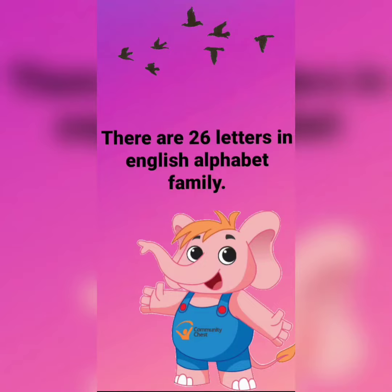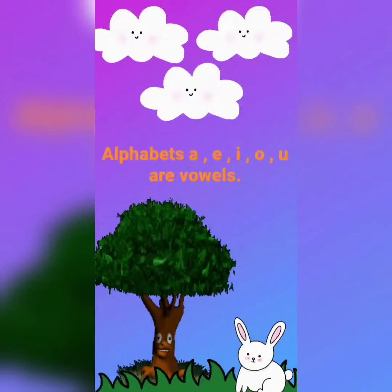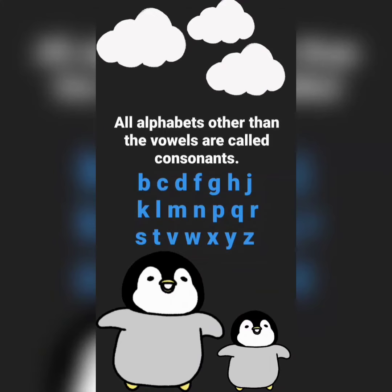There are 26 letters in the English alphabet family. Alphabets A, E, I, O, U are vowels. All alphabets other than vowels are called consonants.